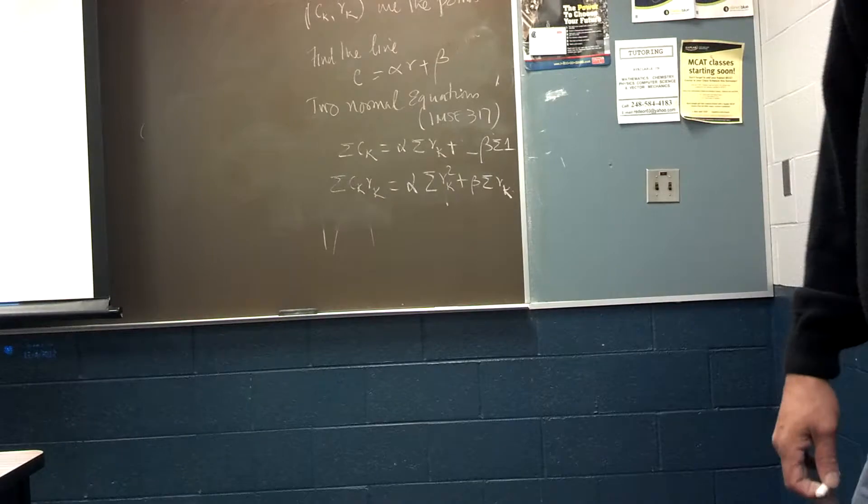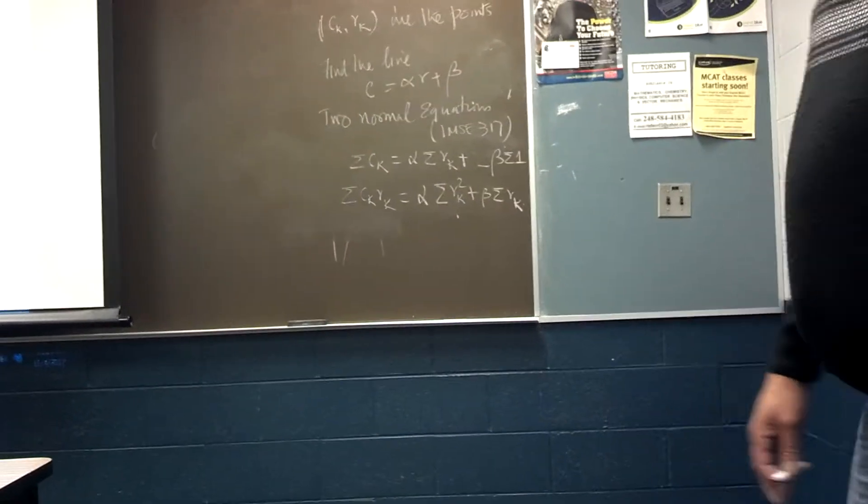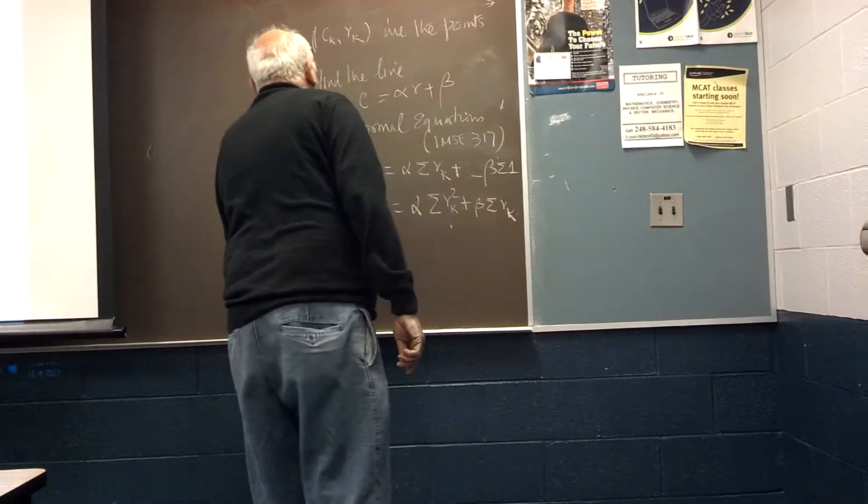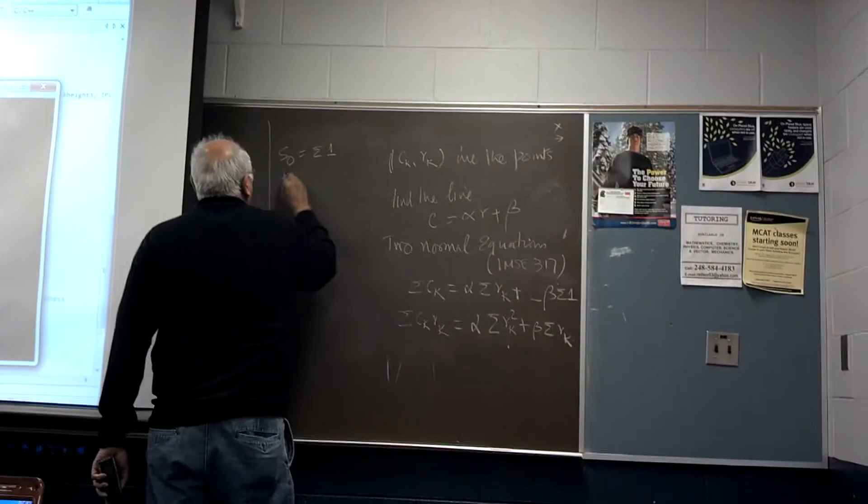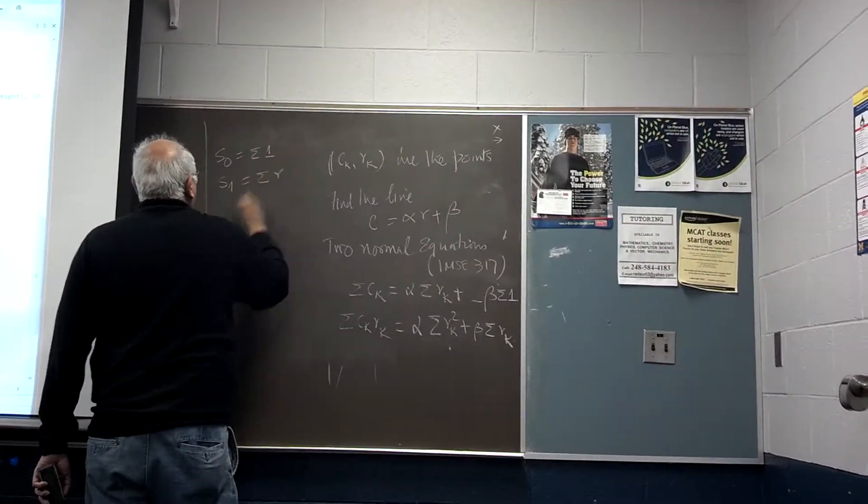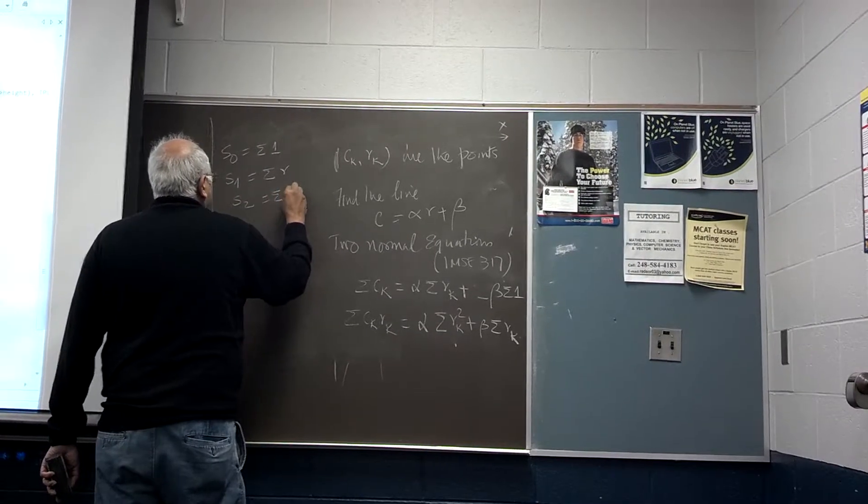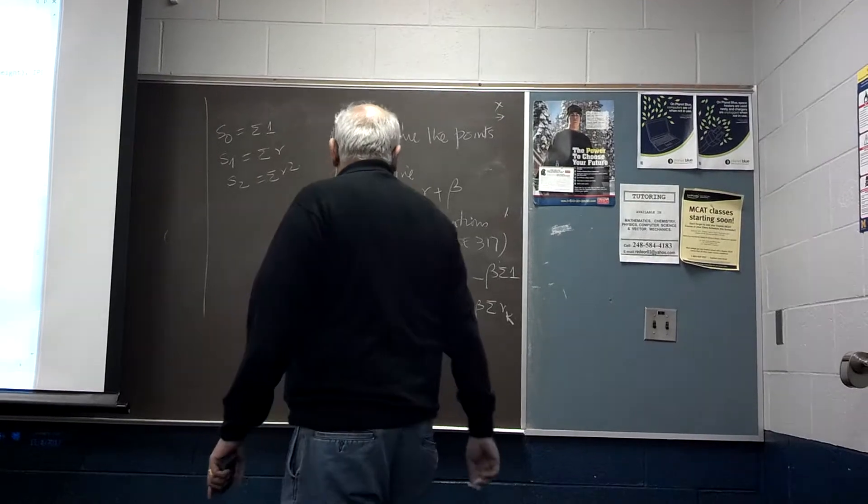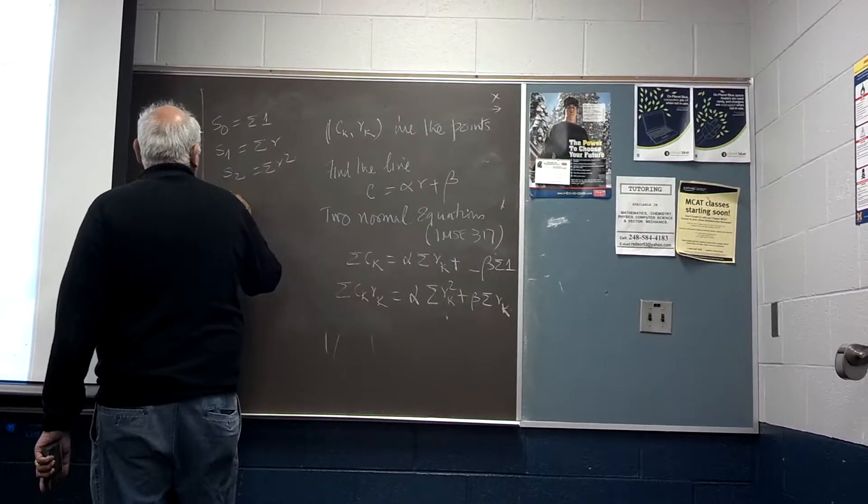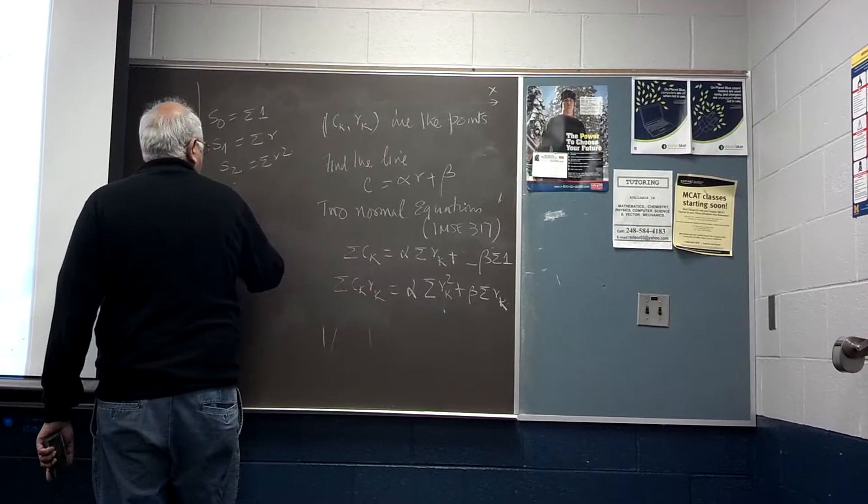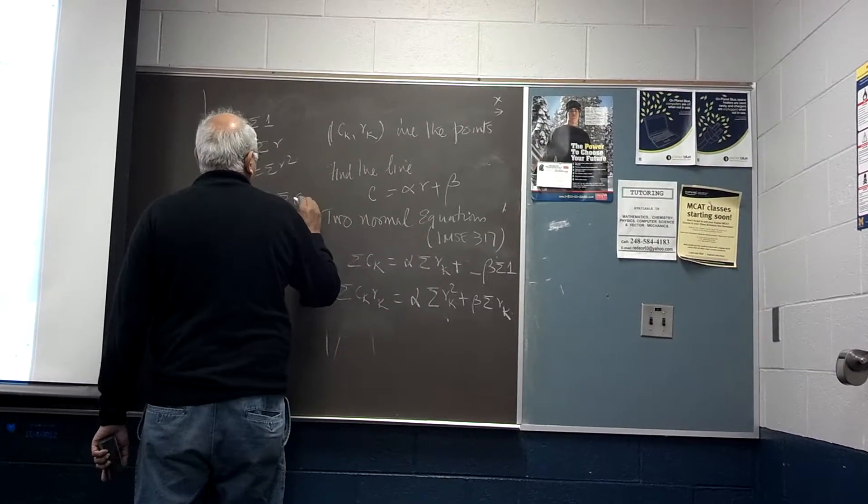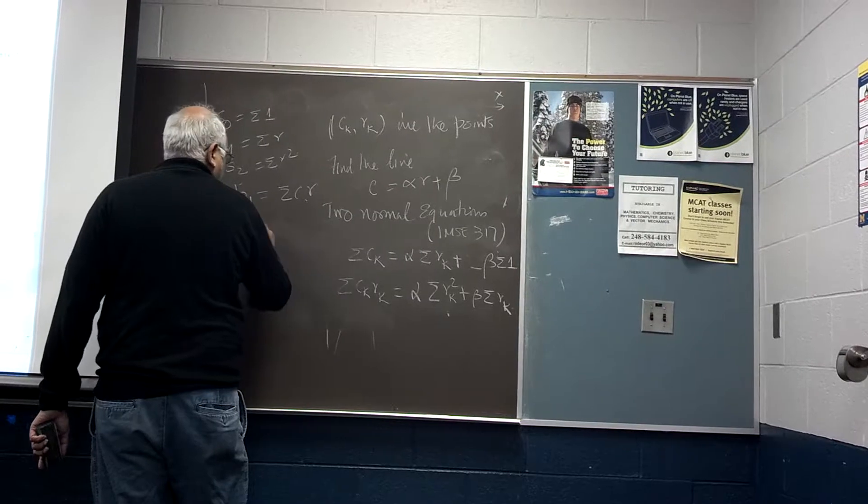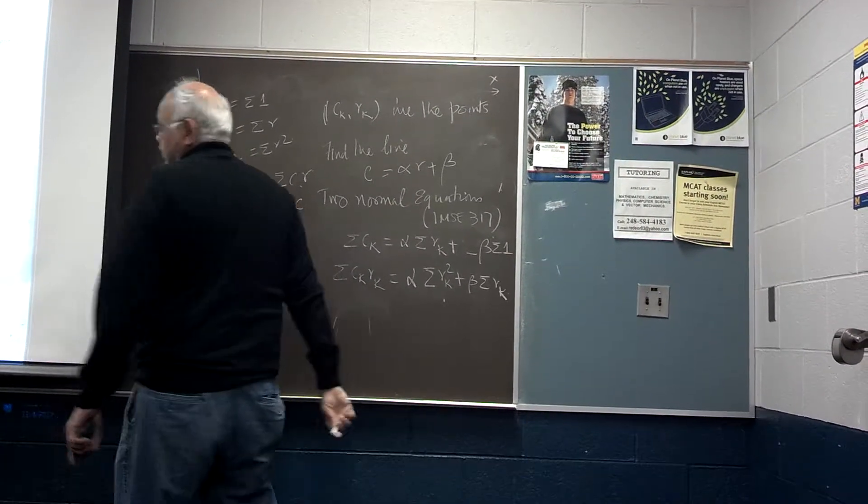Is that clear what I mean? So those are the two equations I need to solve, it's two equations and two unknowns. So let me call S0 is sigma 1, S1 is sigma R, S2 is sigma R squared. Then C times R, B2 is sigma C.